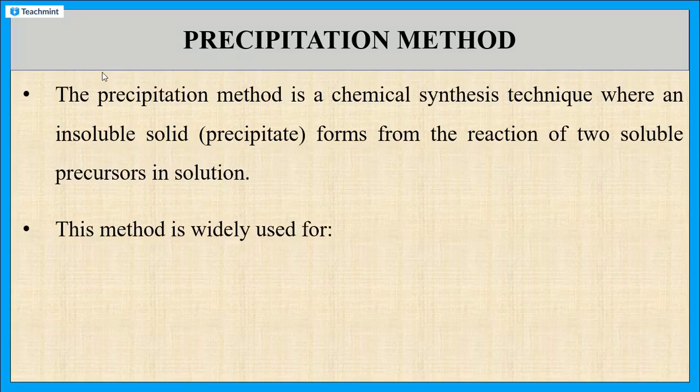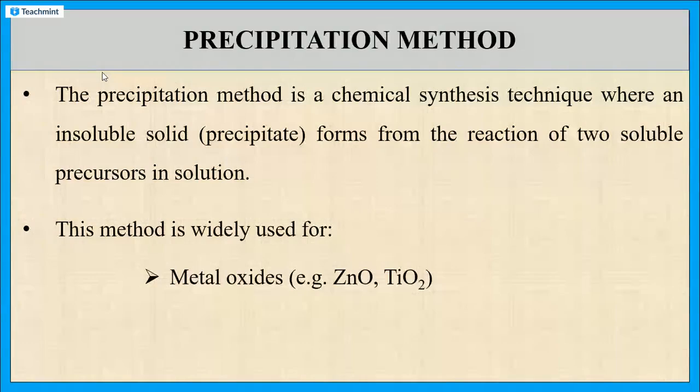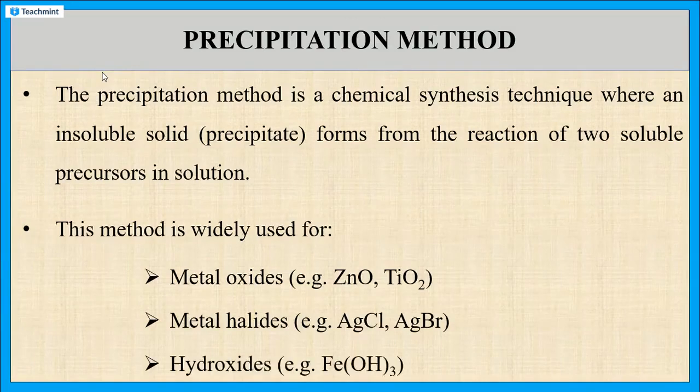This method is widely used for the preparation of metal oxides like zinc oxide, titanium oxide, etc. This method is also useful for the preparation of metal halides like silver chloride, silver bromide, and so on. And also, this method is useful for the preparation of hydroxides, for example, iron hydroxide.